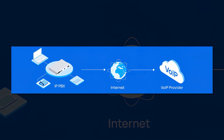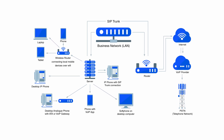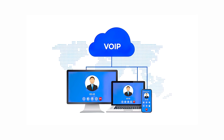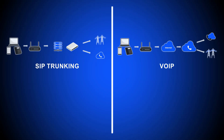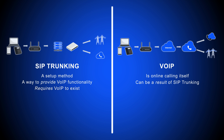Most SIP trunk providers connect SIP and VoIP functionality to the IP PBX you already use, offering monthly payment structures with unlimited calling in North America and metered calling around the world. The main difference between SIP trunking and VoIP is that SIP trunking utilizes your on-site IP PBX system to provide VoIP and PSTN calling, while VoIP solutions are remotely hosted in the cloud by your VoIP telecom provider. However, SIP trunking and VoIP are not directly comparable — SIP trunking is a setup method and VoIP is online calling itself. In fact, SIP trunking is one way to provide VoIP technology, and you can have VoIP functionality through other setup methods besides SIP trunking.